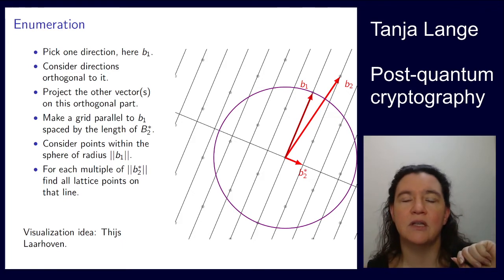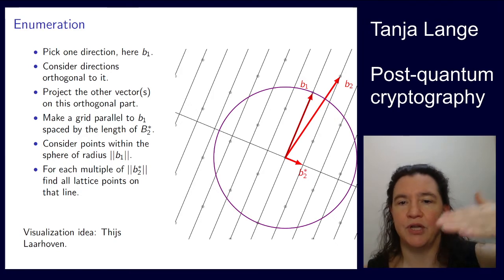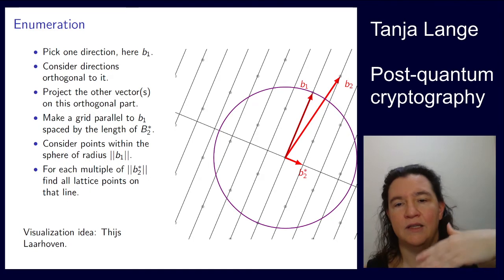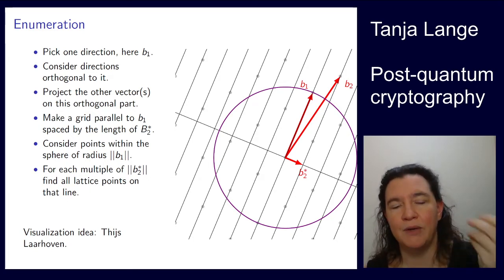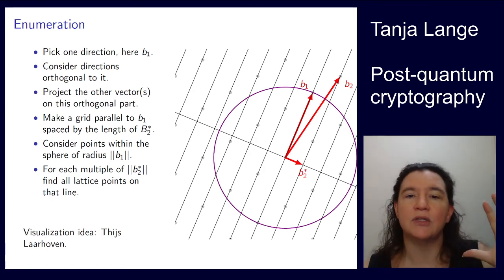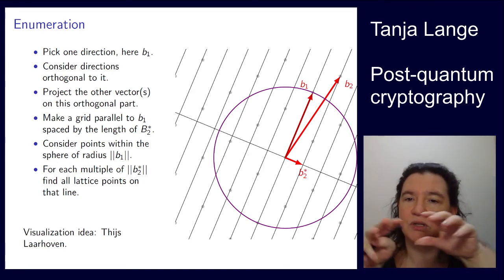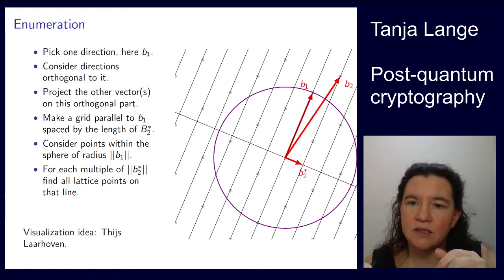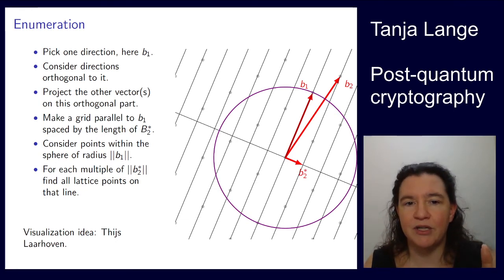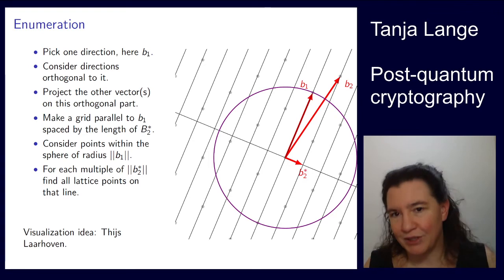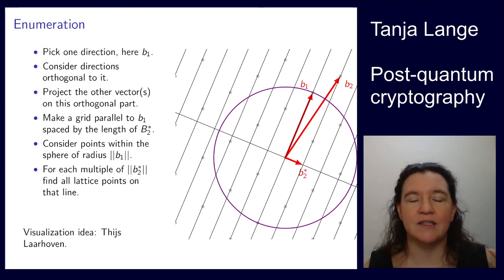In larger dimensions, this would mean you're first picking b1, projecting b2 onto it. Now you're picking this b2 star as a new direction, projecting b3 onto it, getting b3 star, and so on. So you're getting a tree in n dimensions. Each time doing a search down, what you're seeing here is basically the last level where you have everything in two-dimensional space, and it's kind of obvious which one is the shortest. But keep in mind, large-dimensional lattices you can't look into.